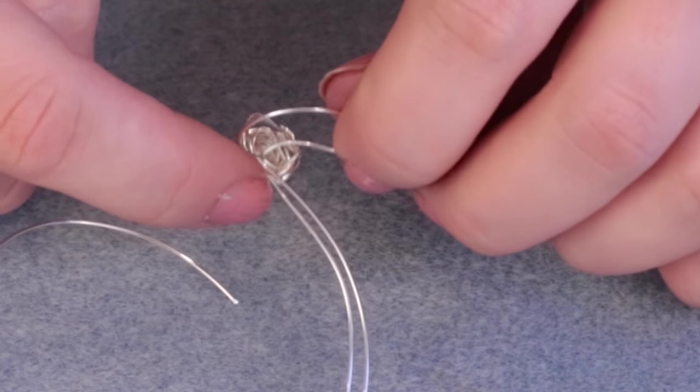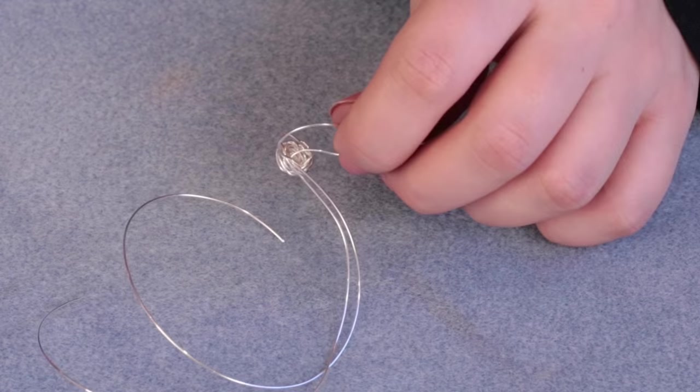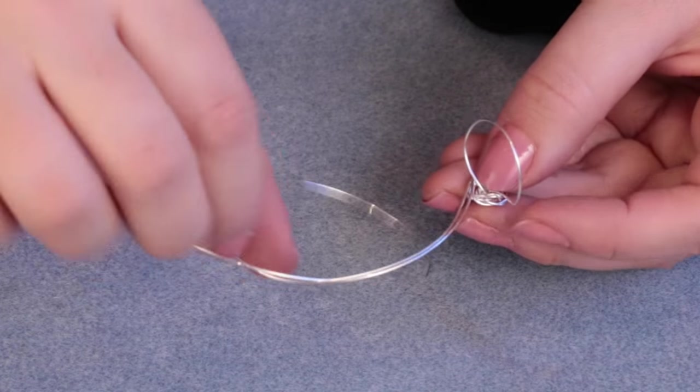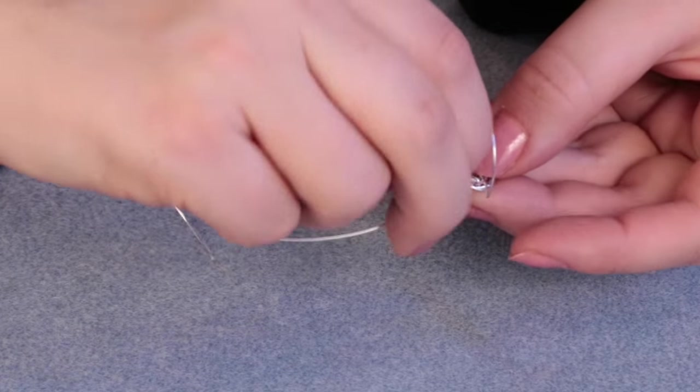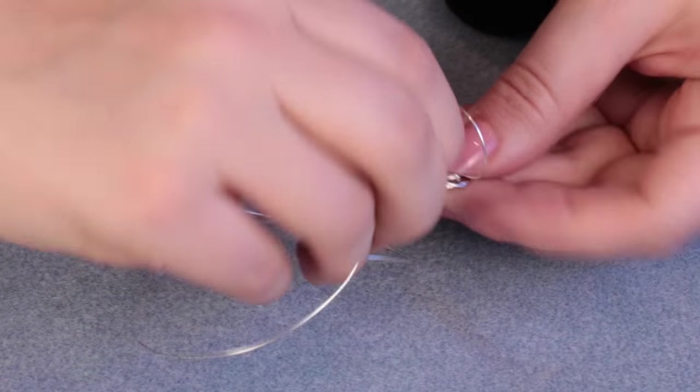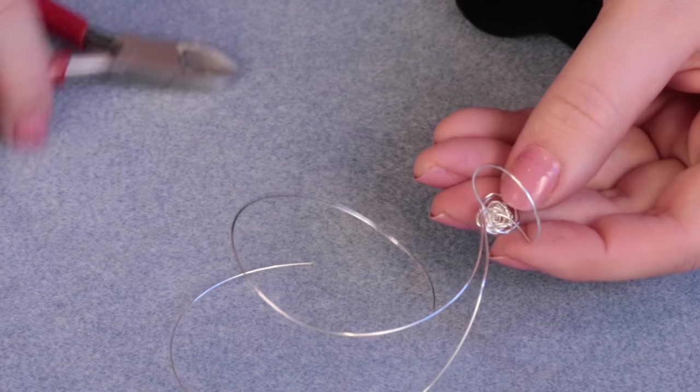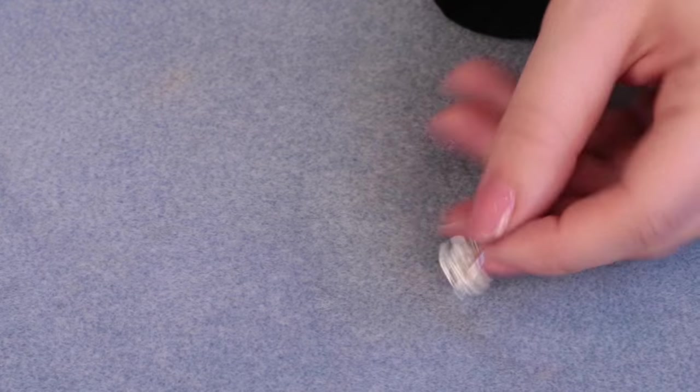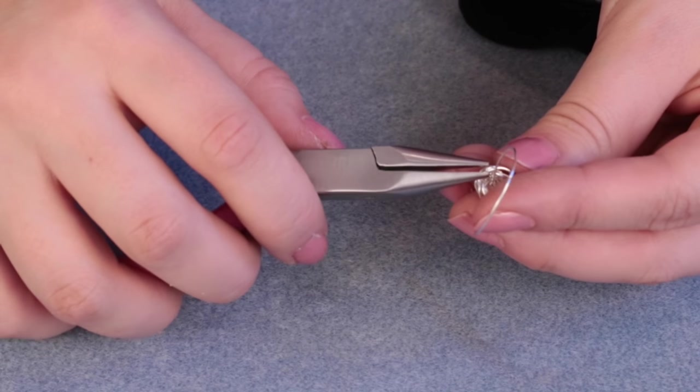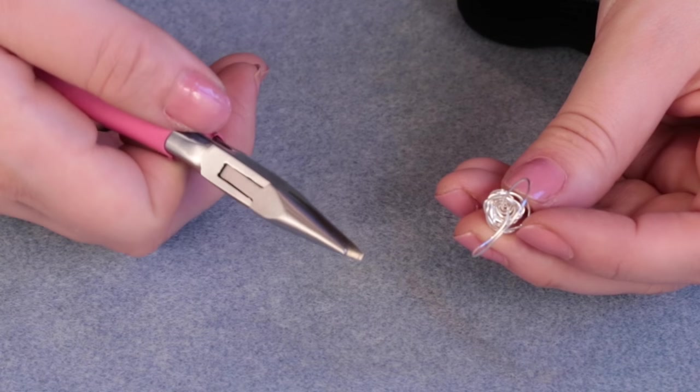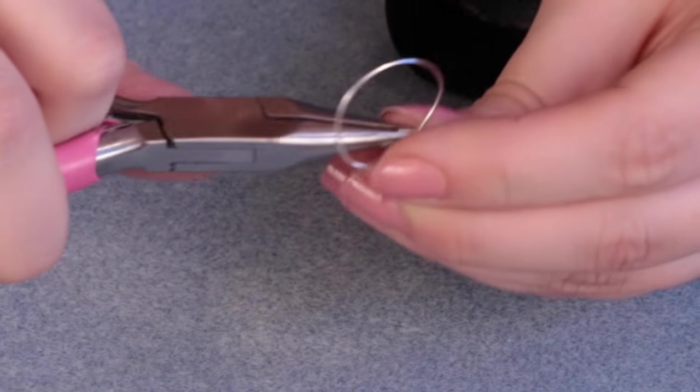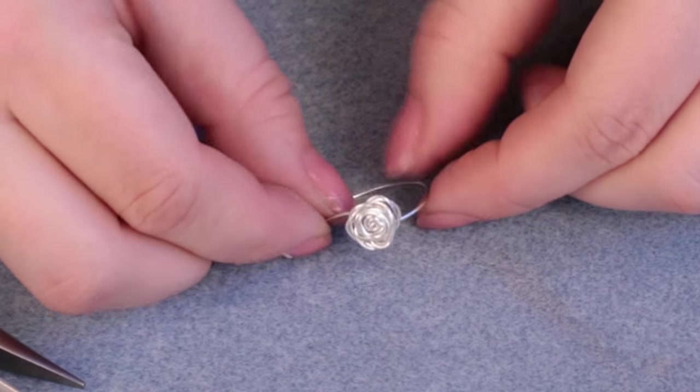You can see that I've got my two wires coming out the end, and I'm just going to give them a final twist together and cut them off with my cutters because we don't need those bits. Then I'm just going to take my chain nose pliers, grab the end bits and just tuck those in. Great, so there we have our ring.